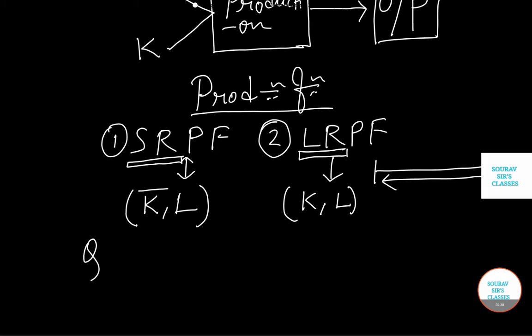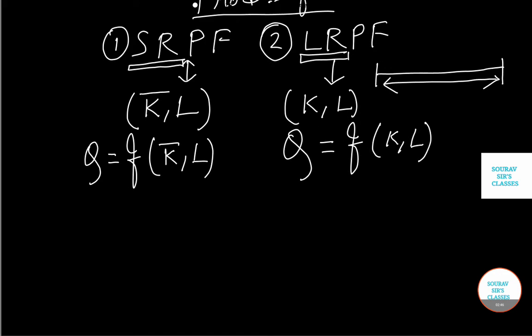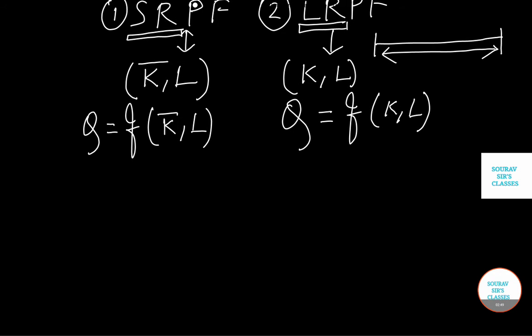So in case of short run production function we can write the production function as Q function of K bar, L. Let us think about why the production function looks like this. Here we are talking about a function in which inputs are turned into outputs. So in case of short run production function as one factor is fixed, it takes a form like this.